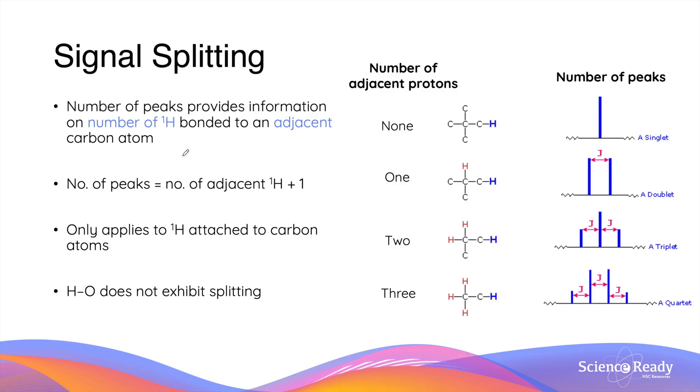Let's talk about signal splitting. The number of peaks that's present in each signal provide information on the number of protons, or hydrogen-1 nuclei, that's bonded to an adjacent carbon atom. Specifically, the number of peaks that's observed equals to the number of adjacent protons plus one.